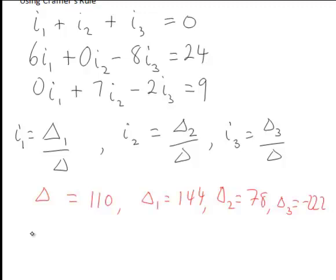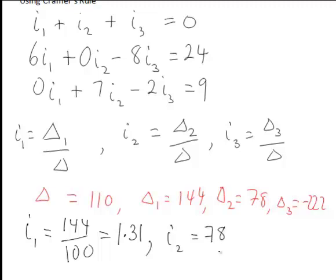Summarizing with the values we found for delta, delta1, delta2 and delta3: i1 being delta1 divided by delta is 144 divided by 110 which to two decimal places is 1.31. i2 is delta2 which is 78 divided by delta of 110 so i2 is 0.71.